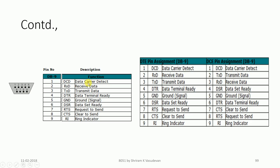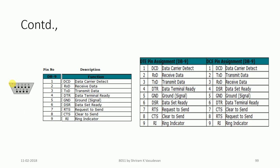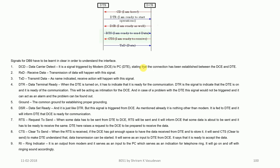The DB9 has 9 signals: data carrier detect, receive data, transmit data, data terminal ready, ground, data set ready, request to send, clear to send, and ring indicator. These are all the pins — or signals — with respect to RS-232, and this is what is used now instead of the 25-pin DB25 connector. We can now use just 9 pins with the DB9 connector.